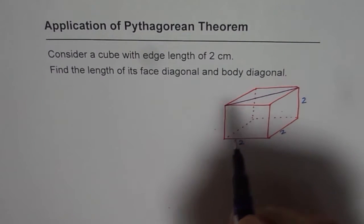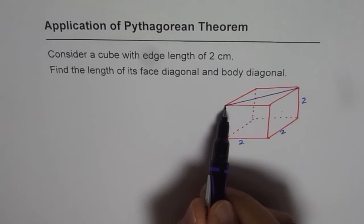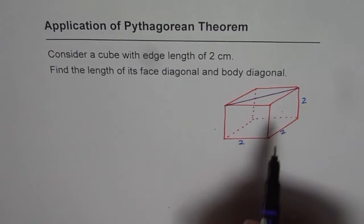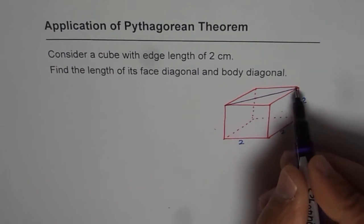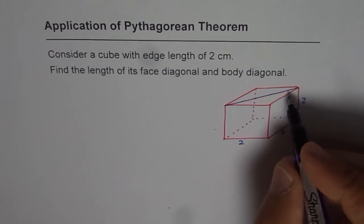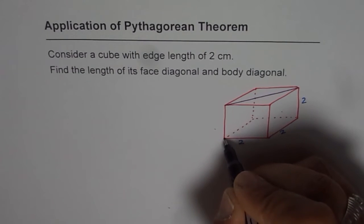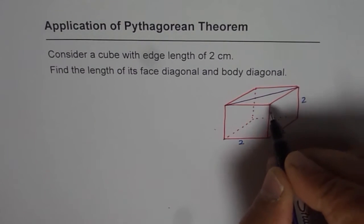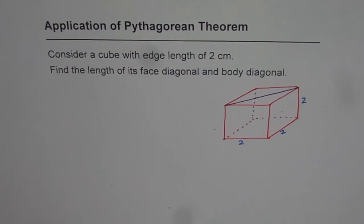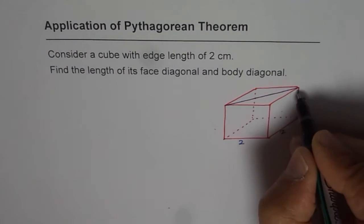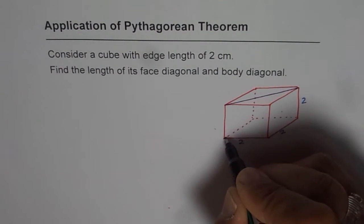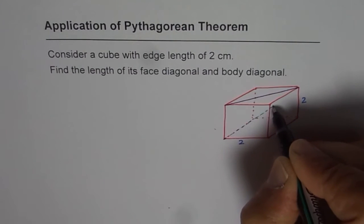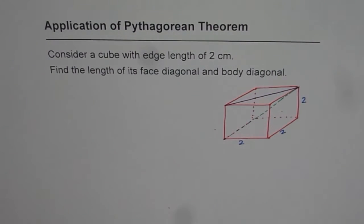And the body diagonal is from this vertex to the opposite end, like this. Or we could do from here to that place. So those are the body diagonals. So body diagonal will be if I join this point with that point. So that becomes the body diagonal. So these are the two diagonals for which we need to find the length.